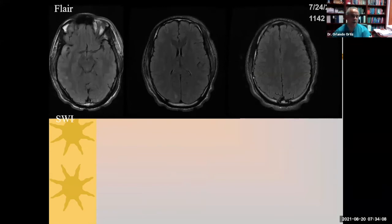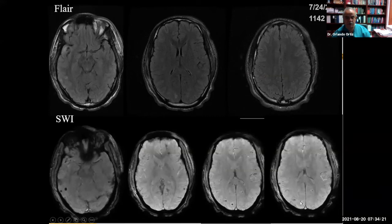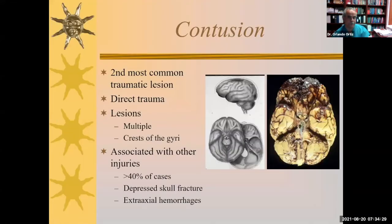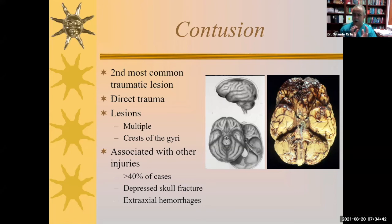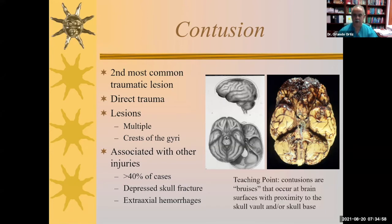The same patient on FLAIR imaging shows subtle foci of high signal intensity at the gray-white junction — these are DAI-type lesions. The value of susceptibility-weighted imaging is demonstrated with numerous lesions in this patient devastated by the assault. Contusions are very common post-traumatic lesions reflecting the brain banging against the inner table of the skull at the base of the anterior cranial fossa, skull base, middle cranial fossa, and petrous temporal bone. They occur at the cortical surface associated with other traumatic injuries.